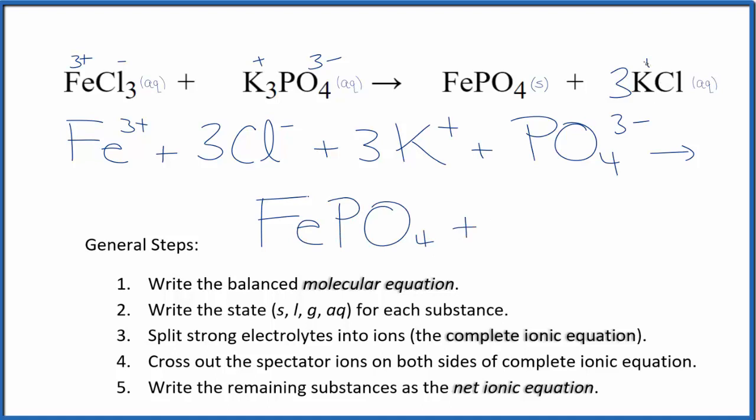And then, for potassium, group 1, so 1 plus, chloride, 1 minus, 3 potassium ions, just like the reactants, and 3 chloride ions, also just like the reactants.